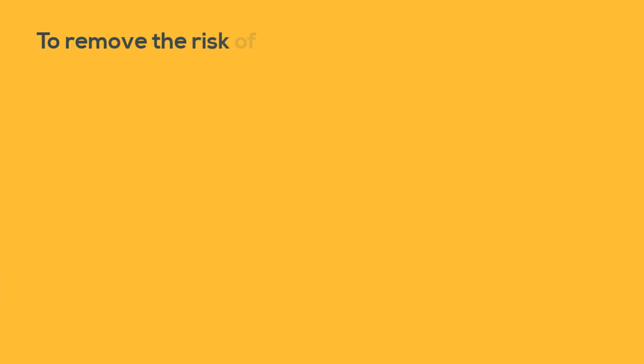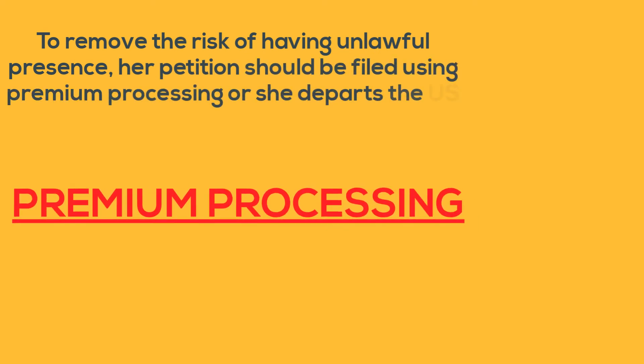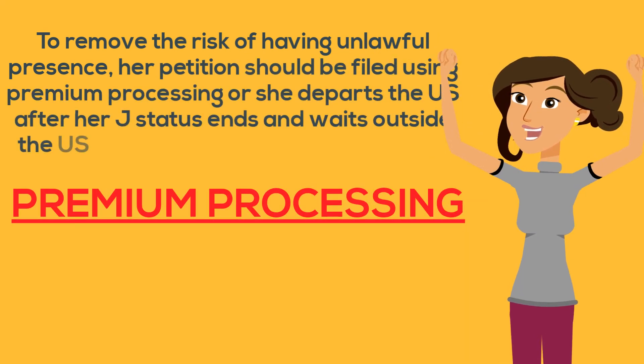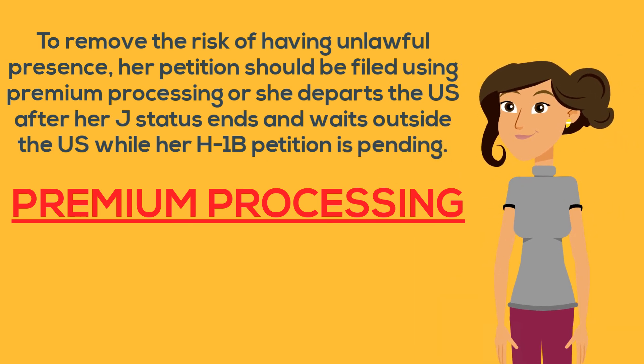To remove the risk of having unlawful presence, her petition should be filed using premium processing, or she departs the U.S. after her J status ends and waits outside the U.S. while her H-1B petition is pending.